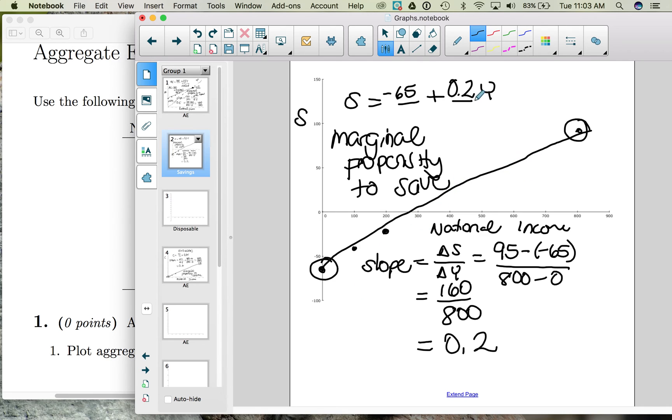So remember that our MPC that we found, so MPC was 0.6. We've just found an MPS of 0.2.